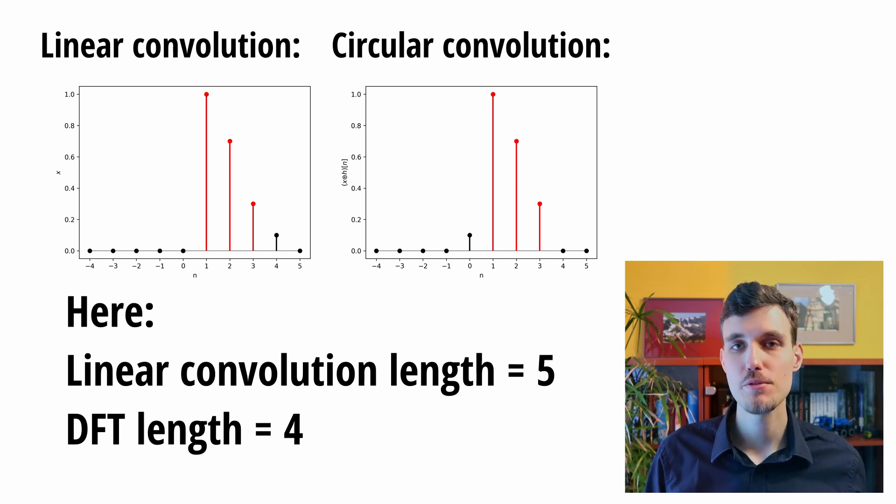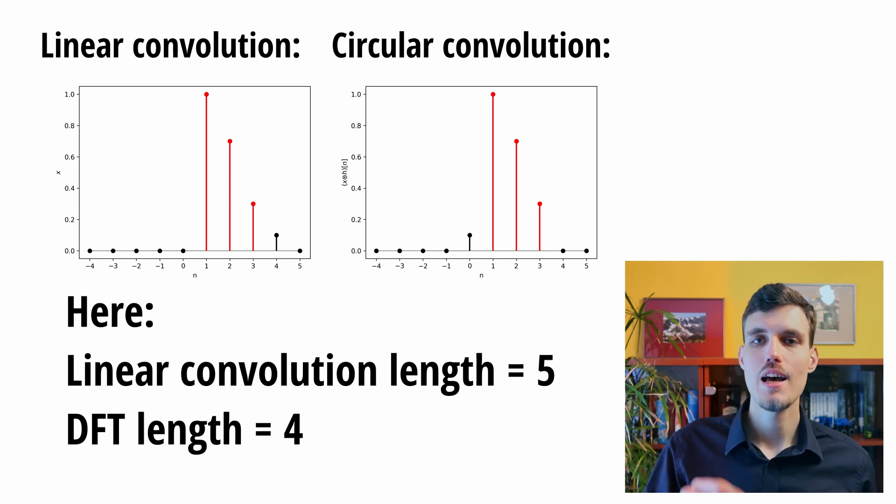depends on the length of the discrete Fourier transform. If we pad our input signals with sufficiently many zeros, so at least as the length of the linear convolution between them, then the output of the circular convolution is exactly the linear convolution.